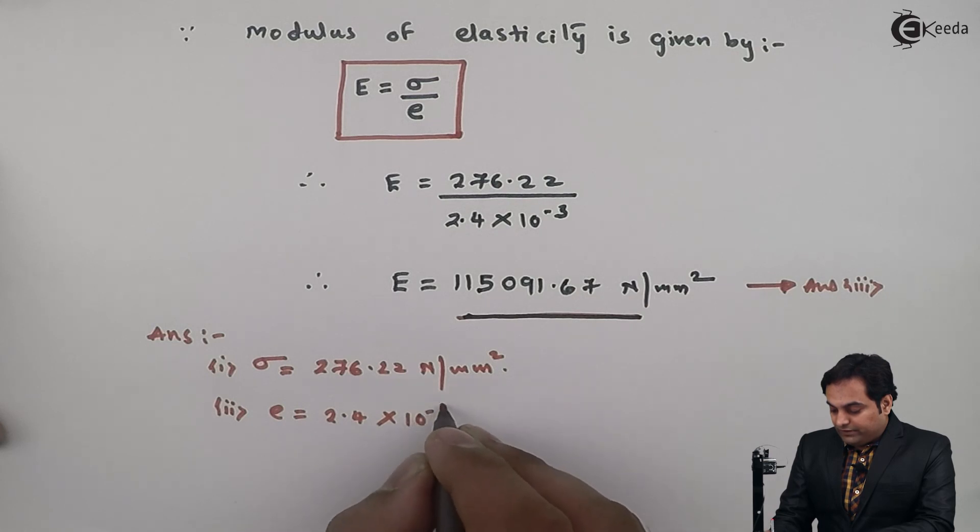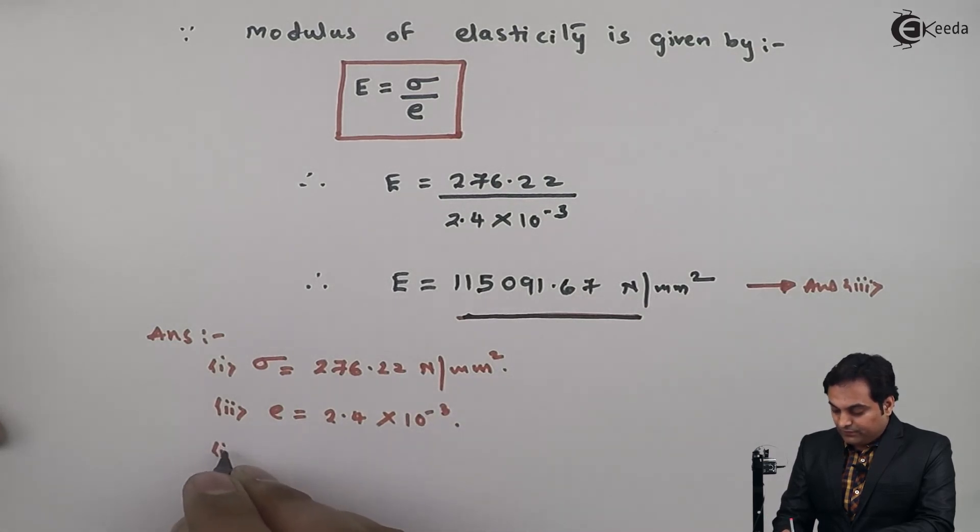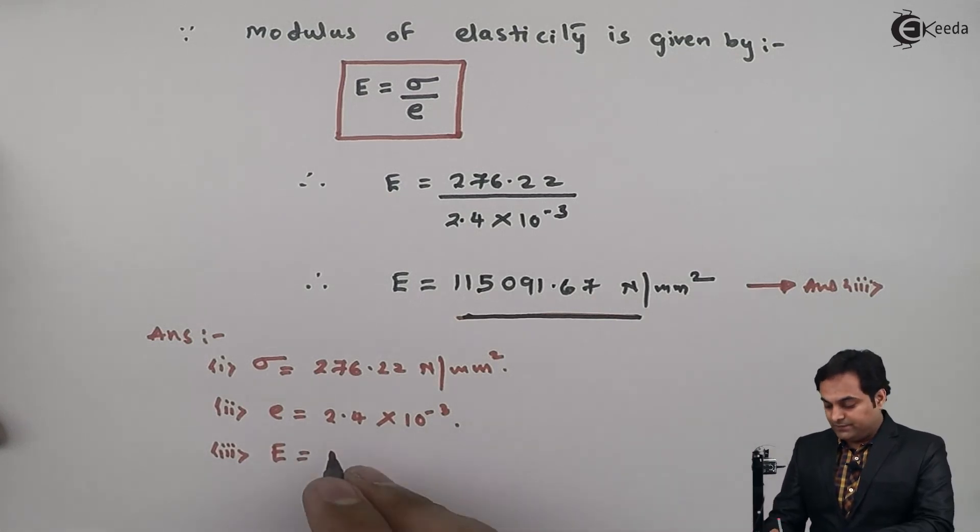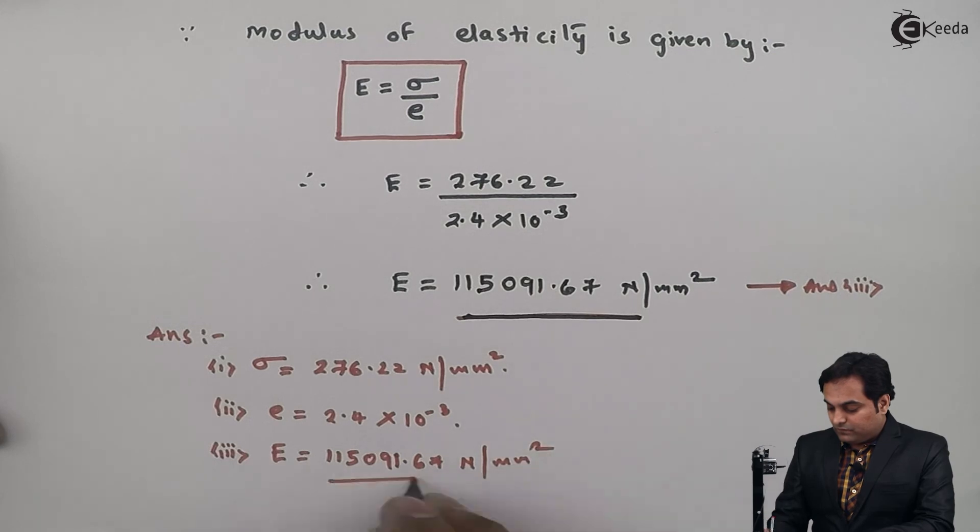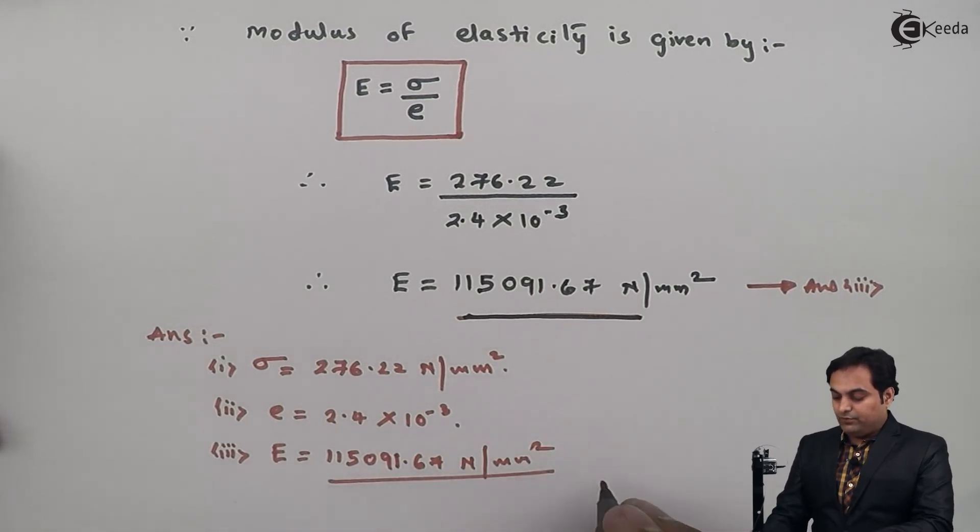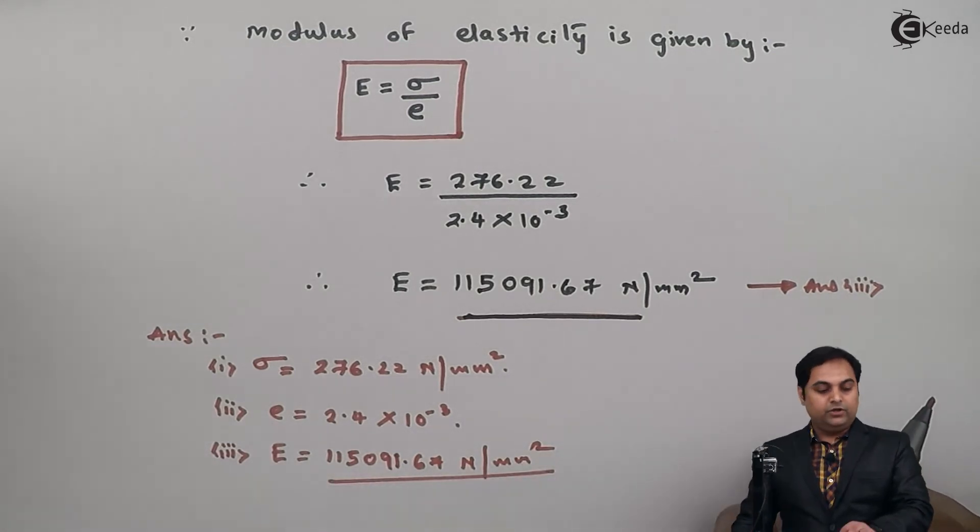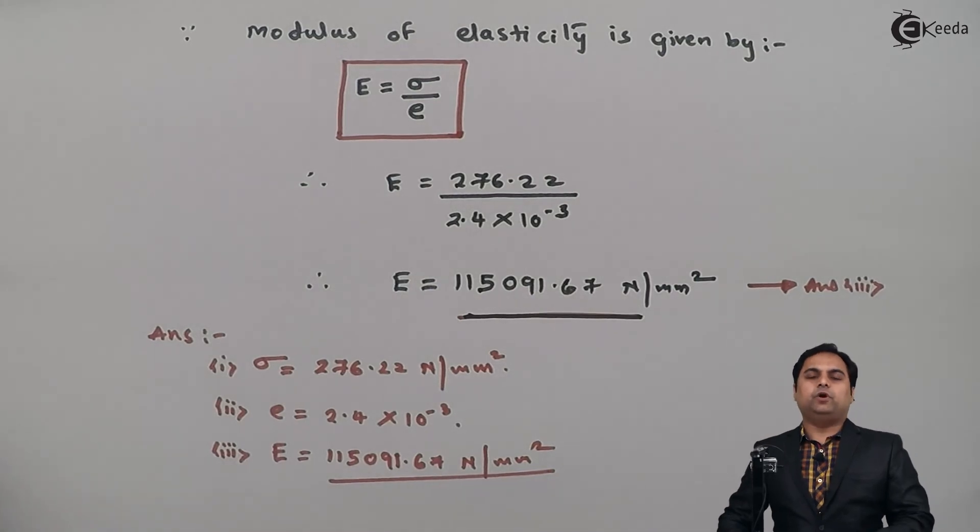And Young's modulus 115091.67 Newton per mm². So here we have completed the problem, that is we have calculated whatever values that were unknown.